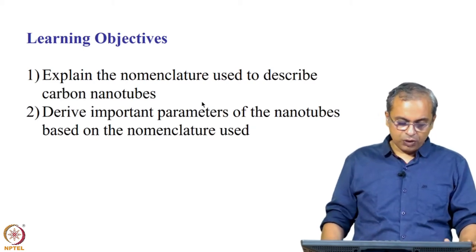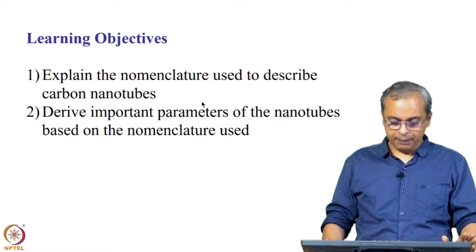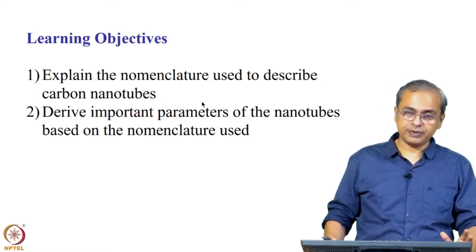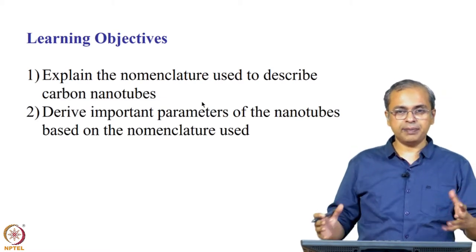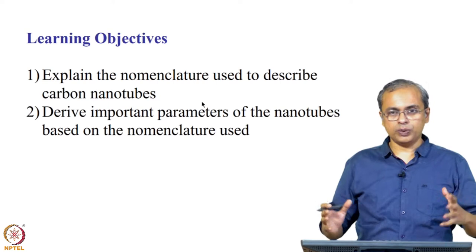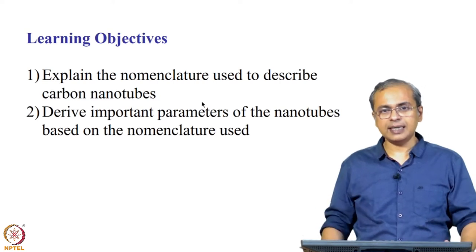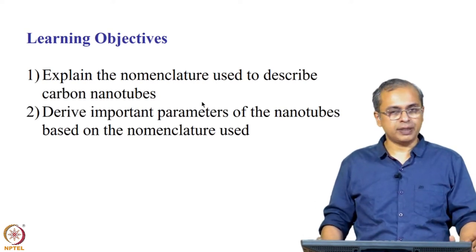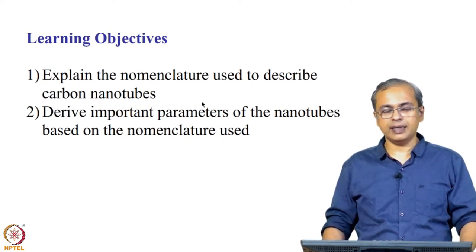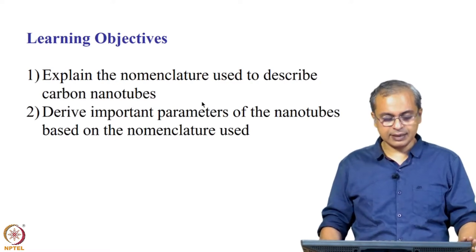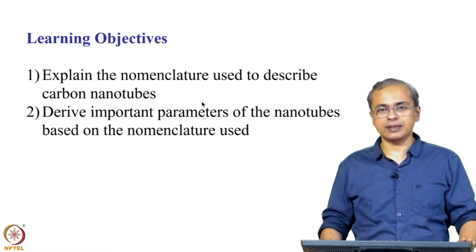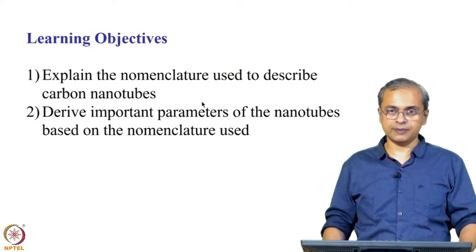Today we will spend some time looking at this material and trying to understand certain aspects associated with it. In particular, we will explain some nomenclature used with respect to carbon nanotubes, and we will derive some important parameters of the nanotube — particularly its diameter and how it is twisted — based on that nomenclature. This is the set of learning objectives we have for the class.